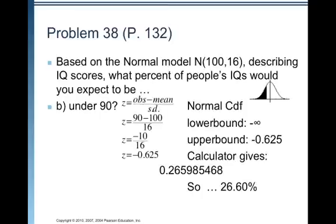Under 90, same process. You find the Z score, so you do 90 minus 100 over 16. So, you get negative 10 over 16, which is negative 0.625. Because it's under 90, so that's less than 90, we're going in the less than direction to the left. So, negative 0.625 is going to be to the left of 0 there, and then we're going to shade to the left. So, our lower bound will be negative infinity. Our upper bound will be negative 0.625. We do normal CDF with that. We always leave the mean 0 and the standard deviation 1, and so we find that 26.6% of people's IQ scores would be under 90.